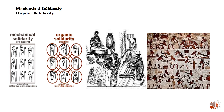Organic solidarity emerges in modern industrial societies, characterized by complexity and diversity. Here, social cohesion arises from the interdependence of individuals with diverse roles and functions. The division of labor is complex, with individuals specializing in different occupations based on their skills and expertise. For instance, in a modern city, people have diverse professions such as doctors, teachers, engineers, architects, and lawyers, and they rely on each other for goods and services, fostering a sense of mutual dependence and cooperation.